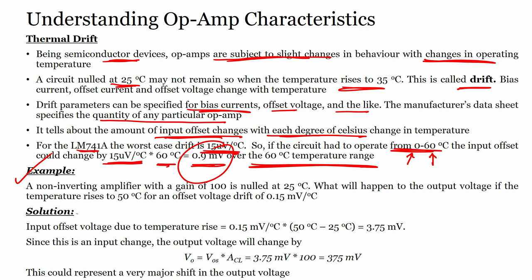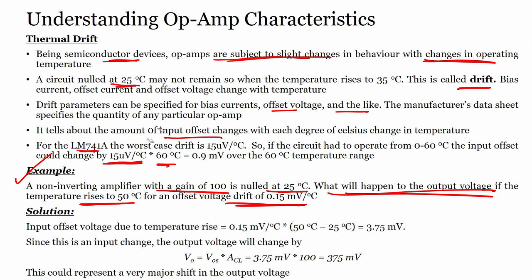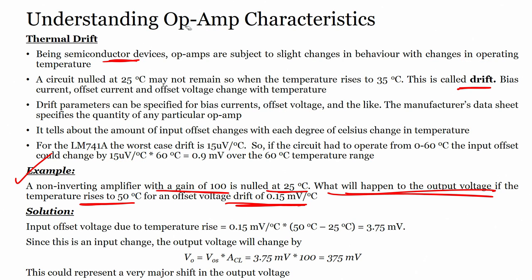Consider an example: a non-inverting amplifier with a gain of 100 is nulled at 25 degrees. What will happen to the output voltage if the temperature rises to 50 degrees, for an offset drift of 0.15 millivolts per degree centigrade? Since the amplifier is nulled at 25°C, output is 0. The input voltage change due to temperature rise is 0.15 mV/°C × (50 − 25) = 3.75 millivolts.